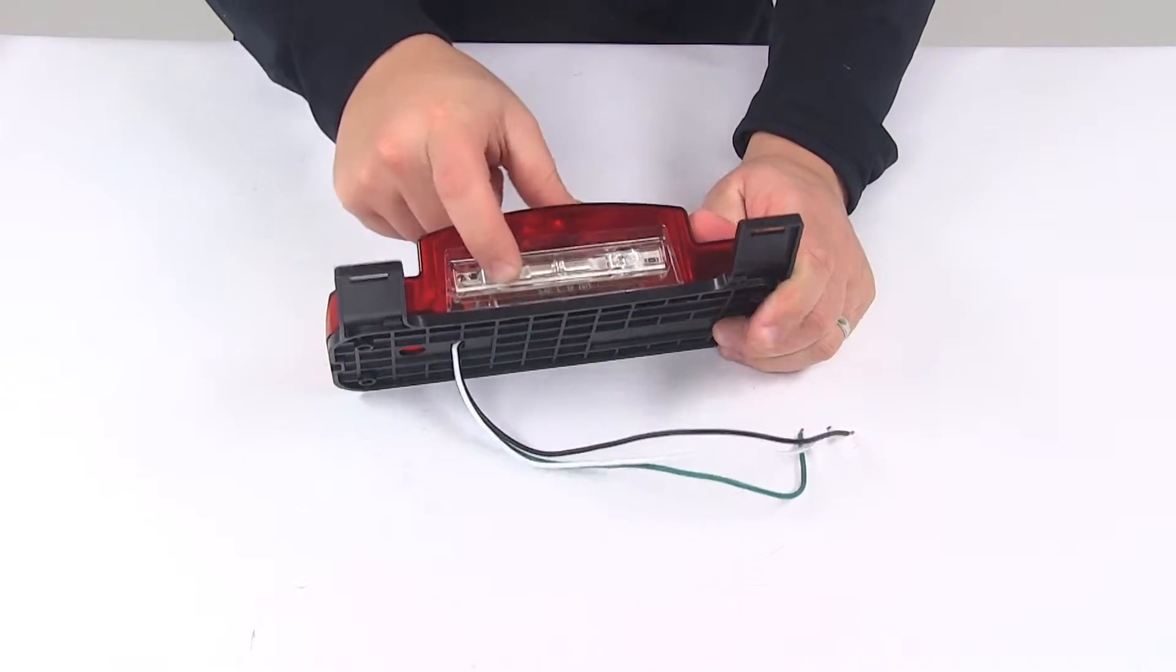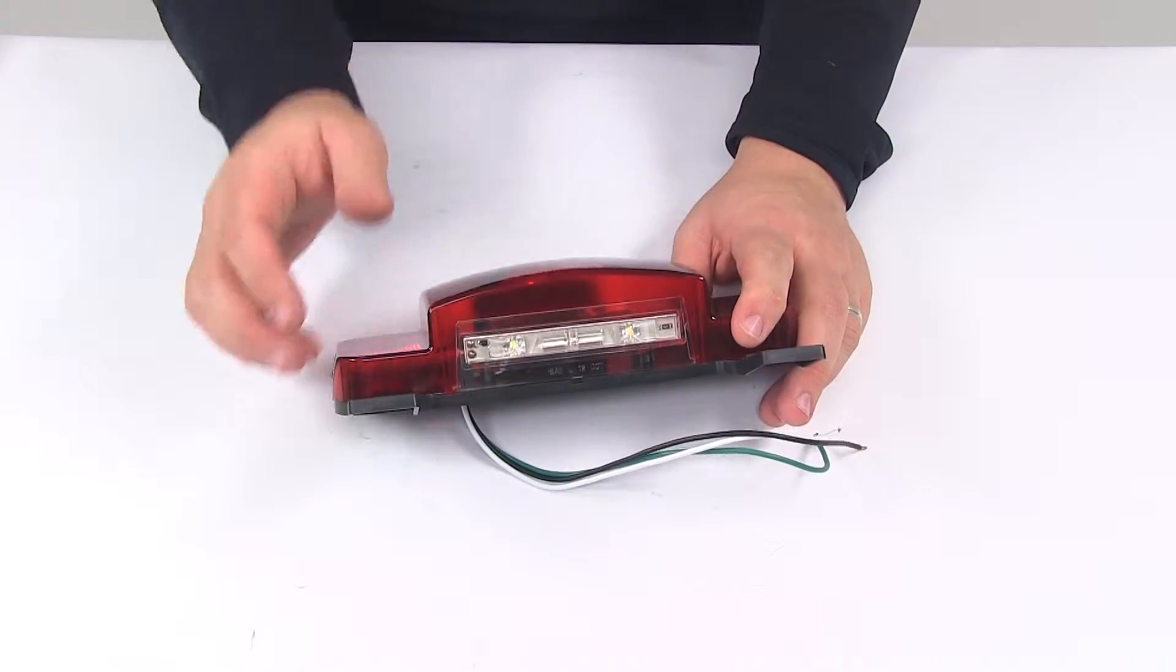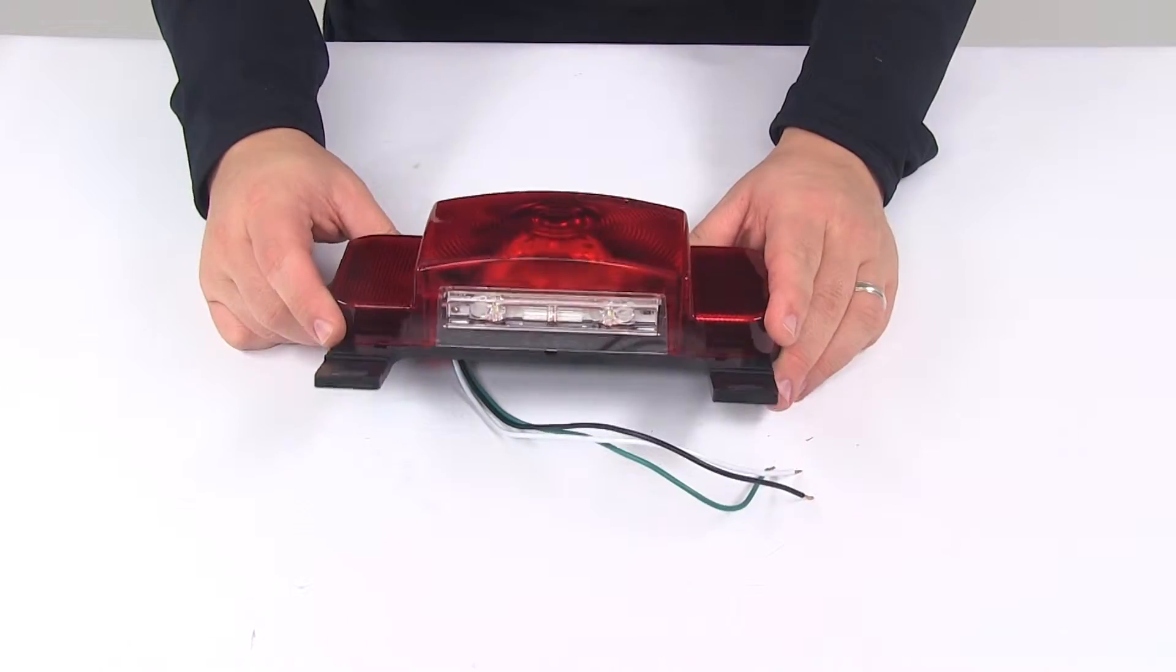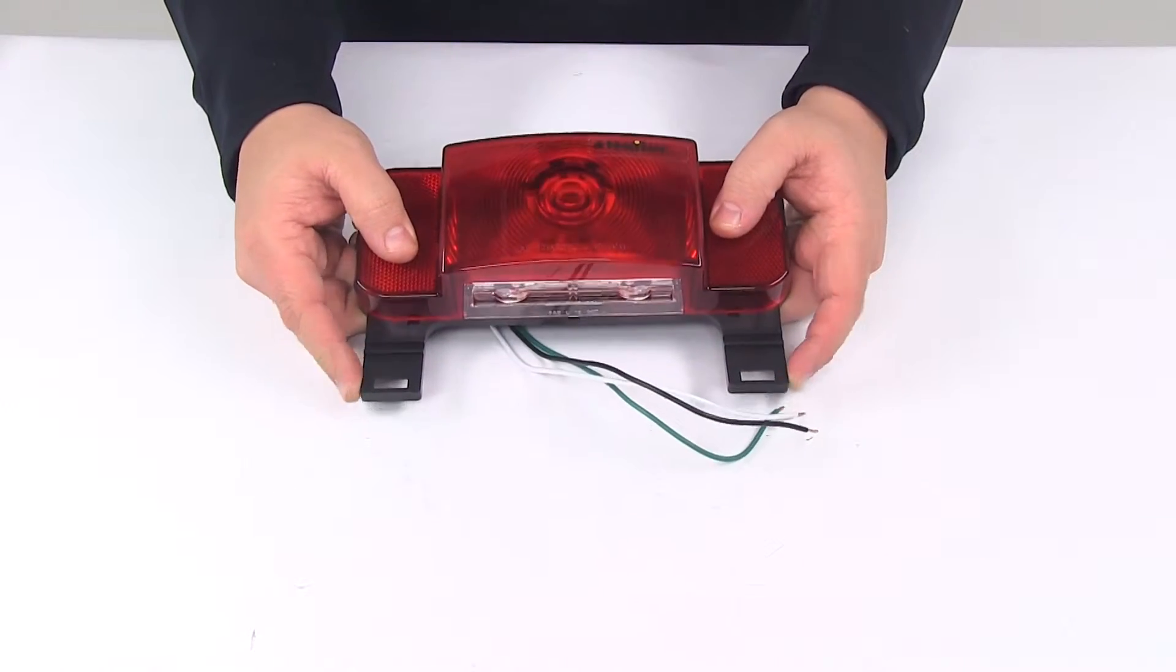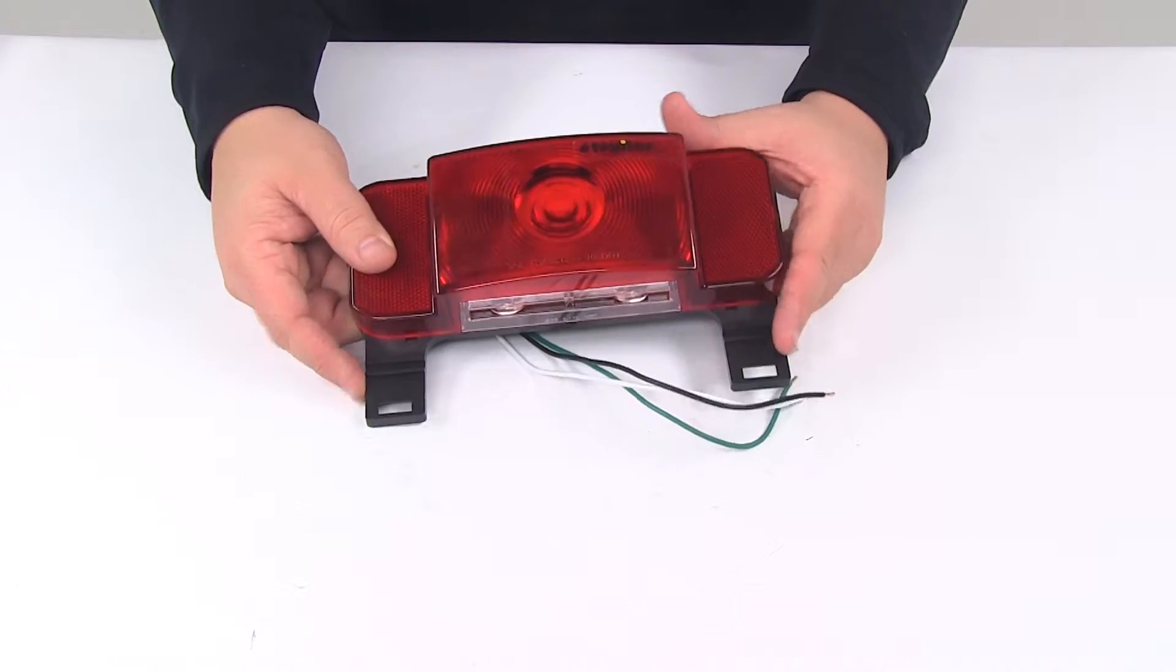On the bottom for the license plate, it has a clear lens that allows a lot of light to come through, and it has the license plate mounting bracket built into the housing as well.